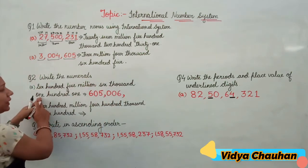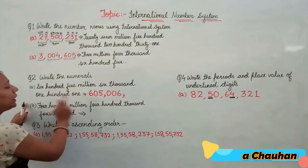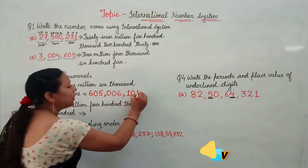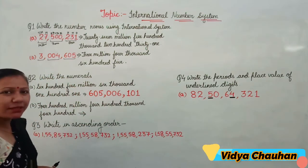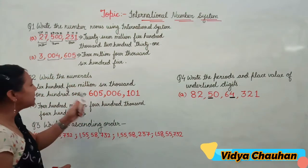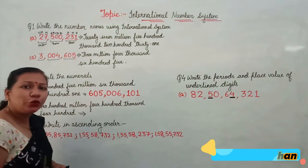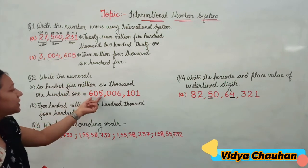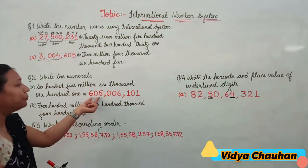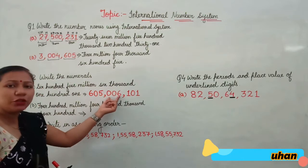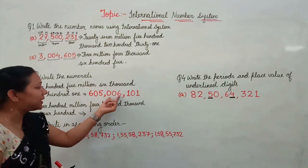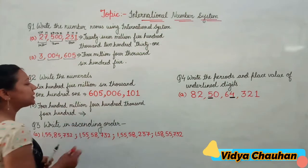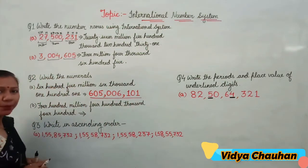Moving forward to write the full numeral. Once again: 605 million gives 605, then 6,000 gives 006 in the thousands group, and then 101 in the ones group. So the complete numeral is 605,006,101.